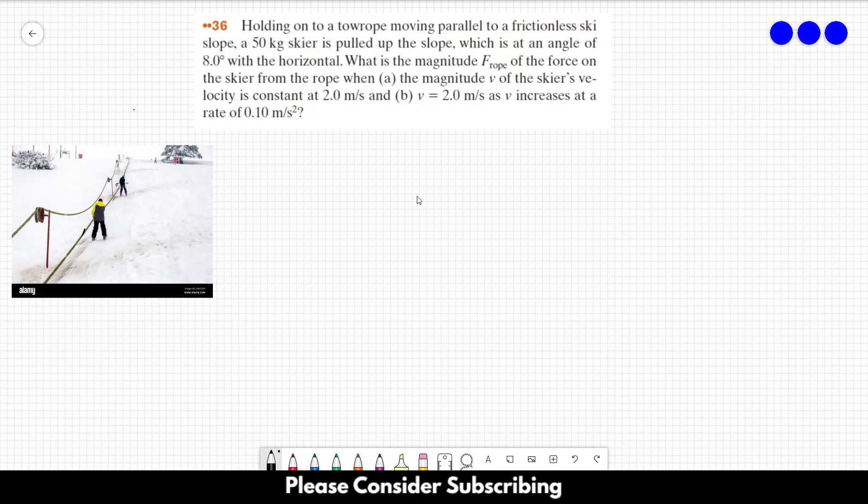Number 36. Holding on to a tall rope moving parallel to a frictionless ski slope, a 50 kg skier is pulled up the slope.